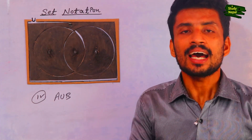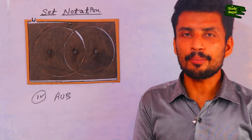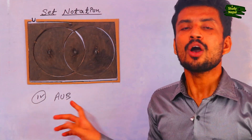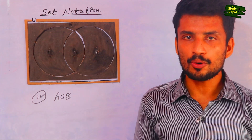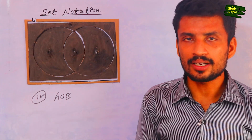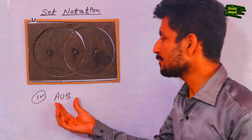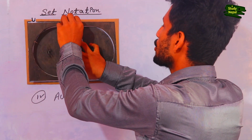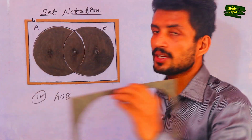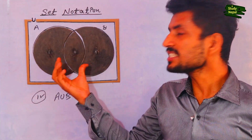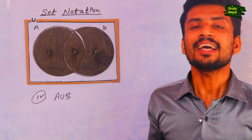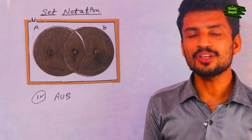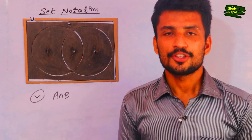Now the fourth topic is A union B. Union means writing everything together. The question is asking A union B, so we have to show the portion of A and B all together. For A union B, you have to remove only the outside portion. This is the shaded part of A union B.